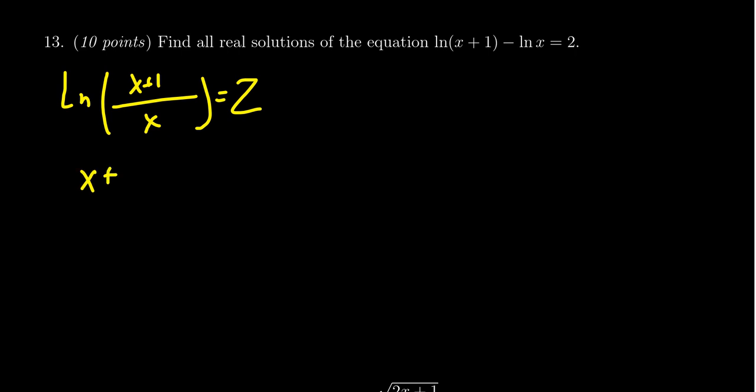So the corresponding exponential form of this equation would be (x+1)/x = e^2. Or another way of thinking about it is you're just exponentiating both sides. The right-hand side becomes e^2, and e when you exponentiate it by a natural log will cancel out because they're inverse operations.